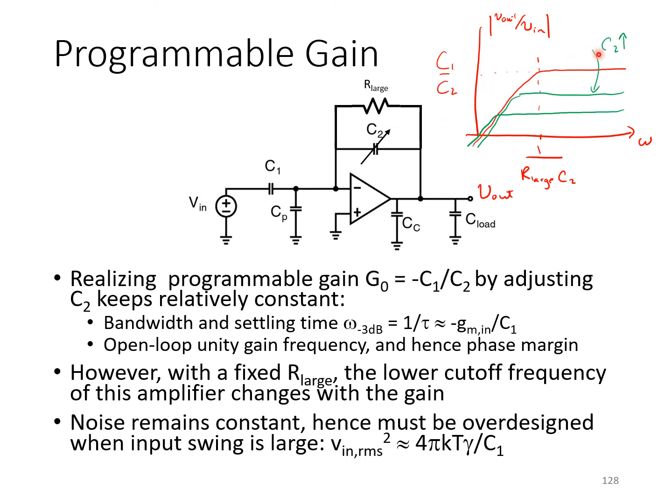When the gain decreases, that's probably because the input amplitude is increased. And in that situation, you could probably put up with more input referred noise. In a perfect world, you'd somehow take advantage of that to save power in the high gain settings. But using this configuration, that doesn't happen.